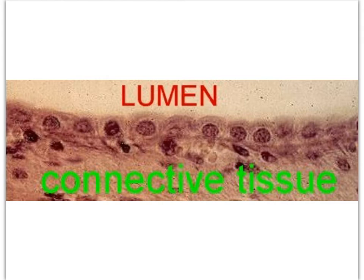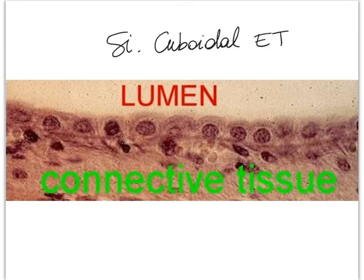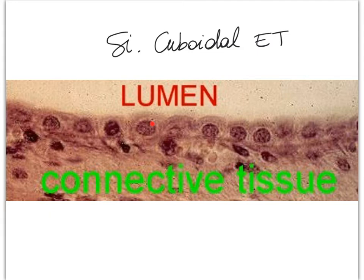Simple cuboidal epithelial tissue is one of the easiest tissues to recognize under a microscope. Here we see a generalized image — right here is the lumen, and remember the first tissue that always touches the lumen is our epithelial tissue. This single layer of cells with gigantic round nuclei is our simple cuboidal layer. Notice the spelling: cuboidal. These big round dark nuclei are very characteristic, and the single layer rests on connective tissue that is vascularized.